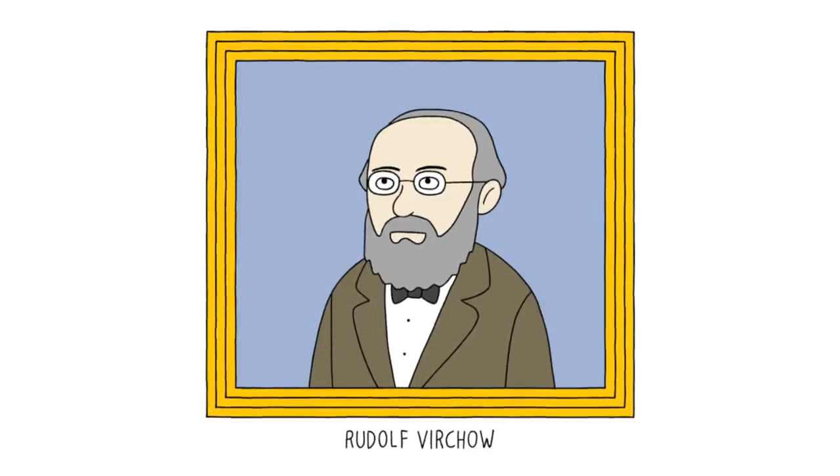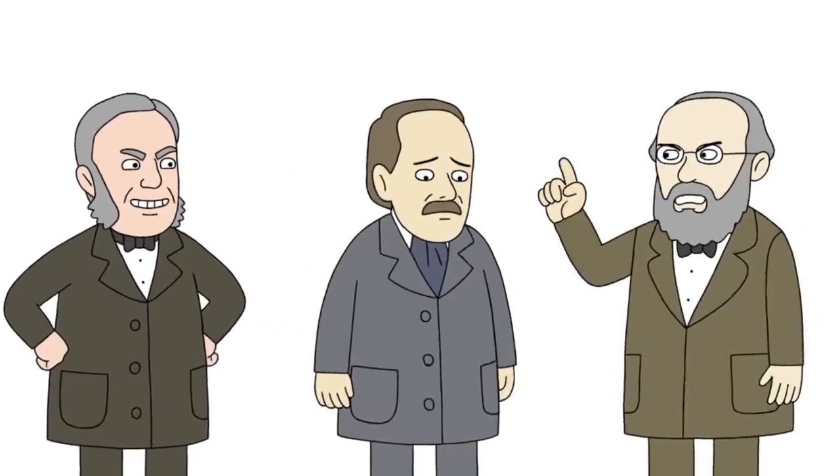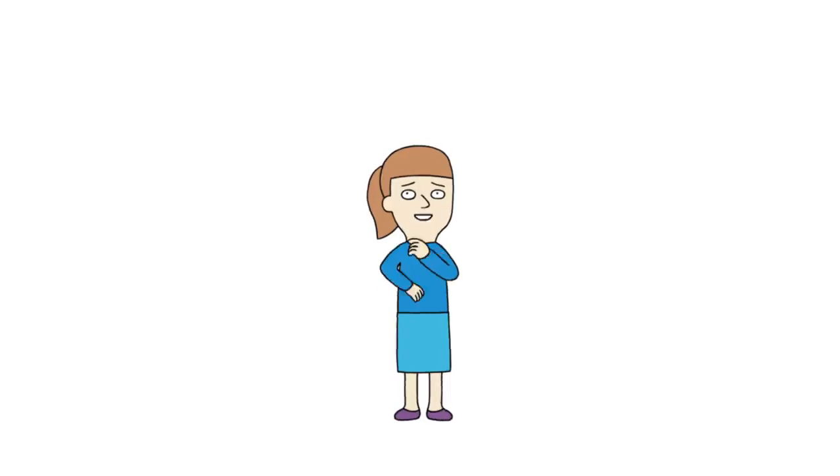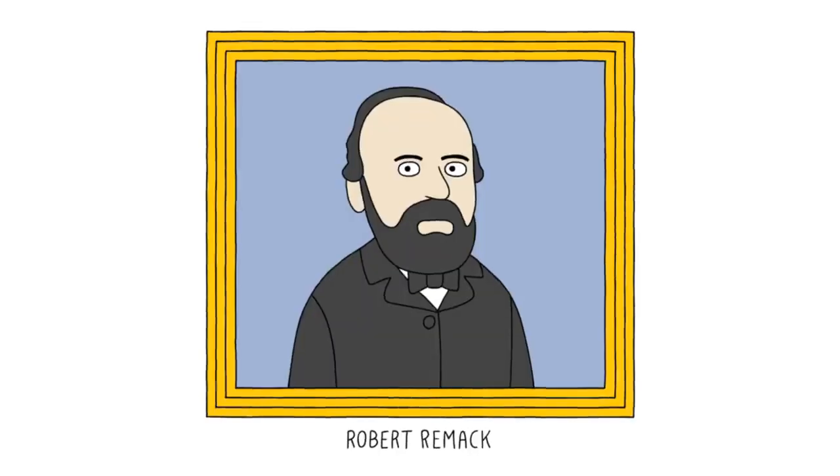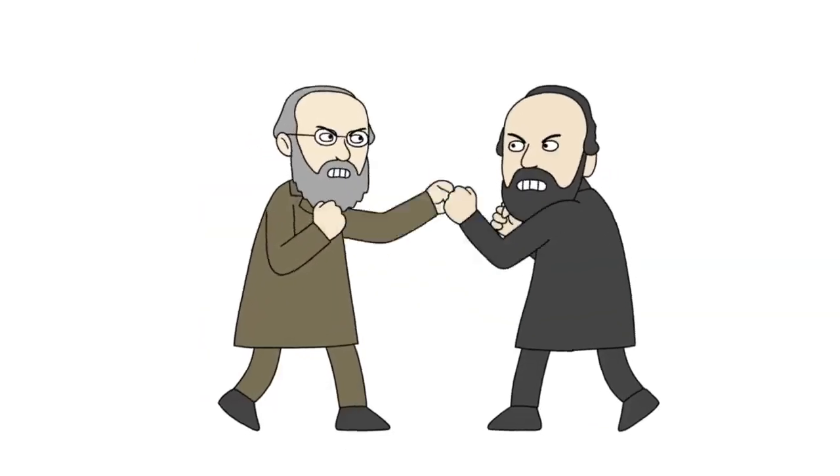That's when another scientist named Rudolf Virchow stepped in with research showing that cells did come from other cells, research that was actually, how to put it, borrowed without permission from a Jewish scientist by the name of Robert Remak, which led to two more feuding scientists.